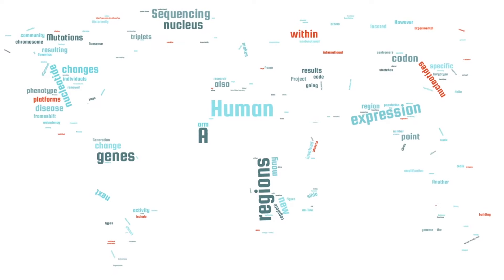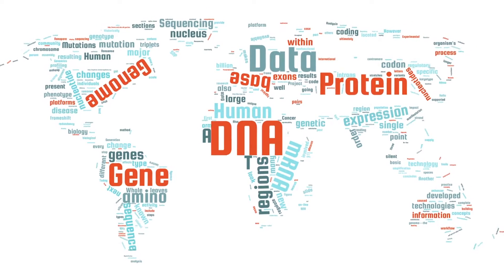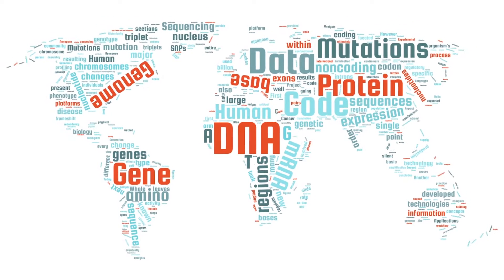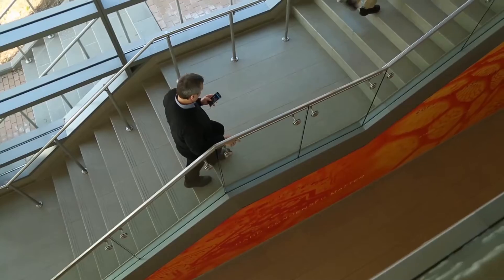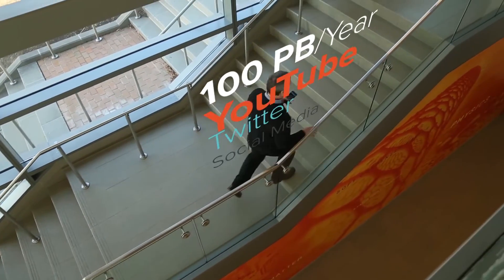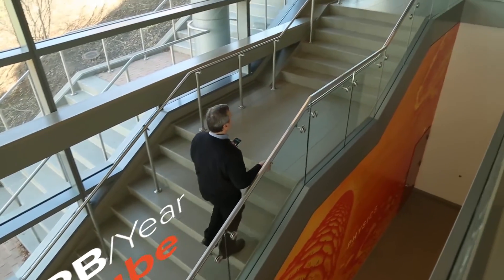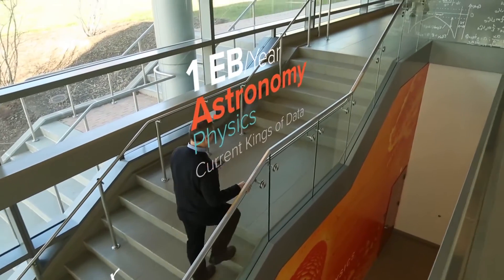The field of genomics is the fastest growing data generator in the world today, with the quantity of genetic data being produced on a daily basis doubling every seven months at the current rate. By 2025, the amount of data generated by genome scientists will surpass that of YouTube, Twitter and the current reigning data kings in science, astronomy and physics.